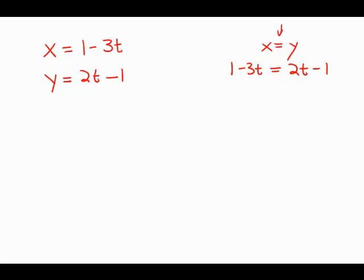Now we can solve for t. I'm going to get the t's on both sides. First, I'm going to add 3t to both sides, so I get 1 equals 5t minus 1.